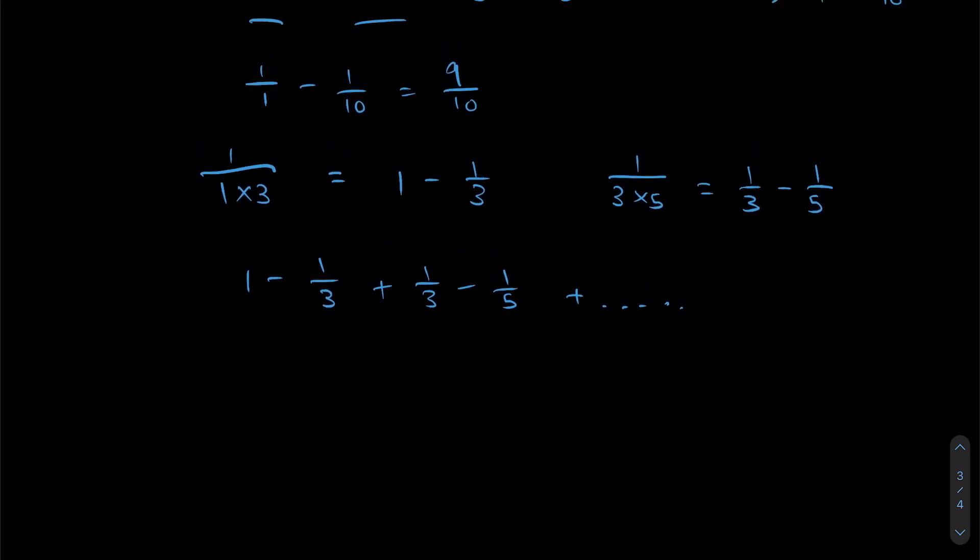However, here's the problem. If we look at what 1 over 1 times 3 is actually equal to, this right here is equal to 1 over 3. But if we look at what we calculated before, 1 minus 1 over 3, this right here is actually equal to 2 over 3.